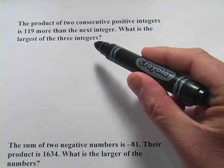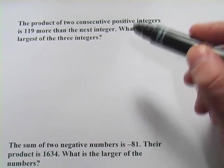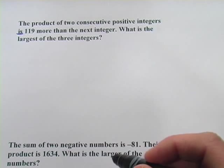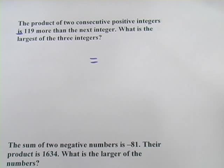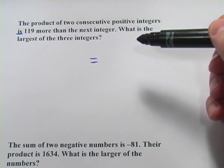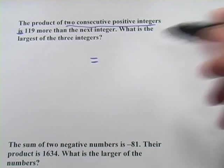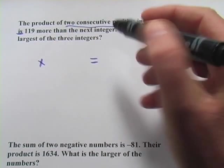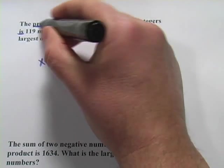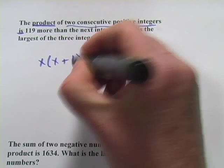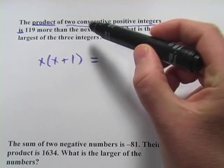This one says, the product of two consecutive positive integers is 119 more than the next integer. So the is in this sentence is our equal sign, so I'm going to just put that in there. And on the left of that equal sign, it says the product of two consecutive positive integers. So I'm going to be multiplying two things together, and two consecutive positive integers, what is that?